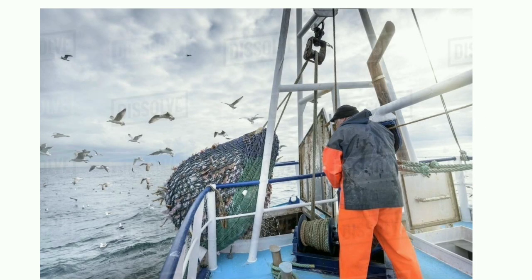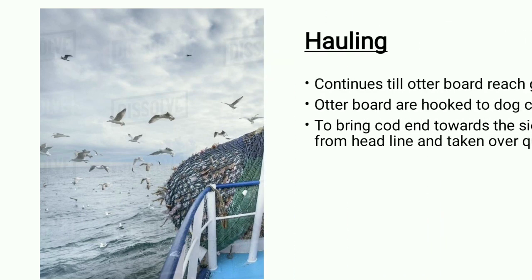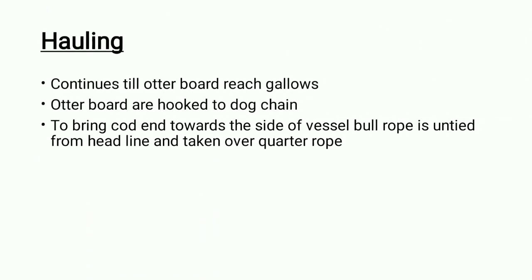This image shows the hauling of the gear. While hauling, both warps are released from the towing block and are hauled by the winches. This continues until the otter boards reach the gallows, then the winch brake is applied and the otter boards are hooked to the dog chain on the gallows. After disconnecting the G-link, once the otter boards reach the gallows, to bring the cod end toward the side of the vessel, the bull rope is untied from the headline and taken over the quarter rope.